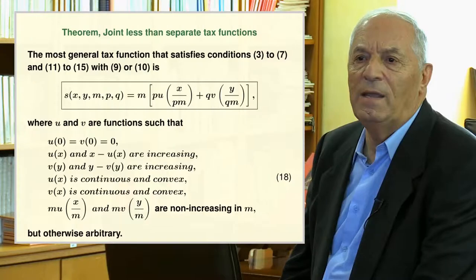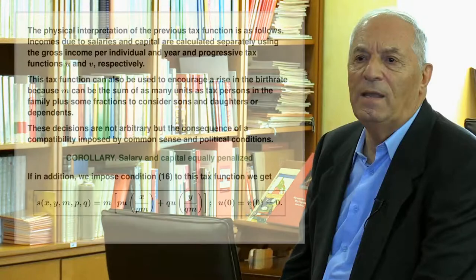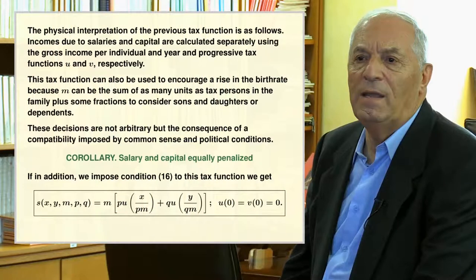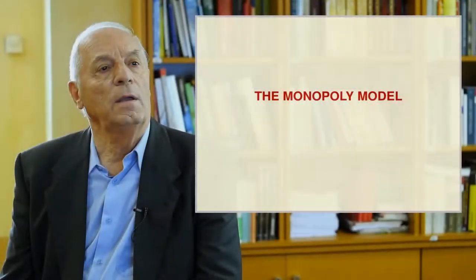This theorem provides the general solution to our taxation problem as the function inside the box. The arbitrary functions U and V must satisfy the sixth condition in the slide to satisfy all stated conditions but are otherwise arbitrary. Salary and capital incomes are calculated separately using gross income per individual per year and the progressive tax functions U and V respectively. This tax function can encourage an increase in birth rate because M can sum tax members plus fractions for dependents. These decisions are the consequence of compatibility imposed by common sense and political conditions, leading to a corollary showing what happens when salary and capital are equally penalized.